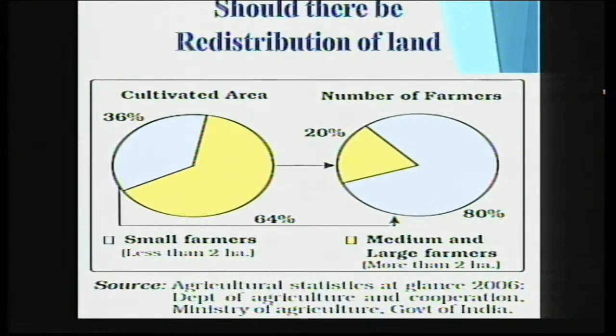There is still a fair difference between cultivated area and number of farmers, particularly in the rural arena — so should there be redistribution of land? Yes there should be. Coming back to this pie chart: 20 percent of the farmers own 64 percent of the cultivated area, and 80 percent of the farmers own only 36 percent of the cultivated area. We need to redistribute land in favor of the landless.